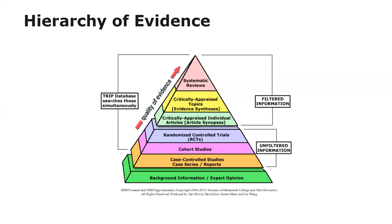Next would be unfiltered information through studies, such as randomized controlled trials, cohort studies, case-controlled studies, or case series and case reports. These are all single studies. Randomized controlled trials are higher up because their study design is stronger, but they're still in the middle of the pyramid because they're single studies. Just because a single study has one result does not mean another study with the same methodology would have the same result. Studies need to be repeated, and then stronger conclusions can be drawn based upon their combined results.